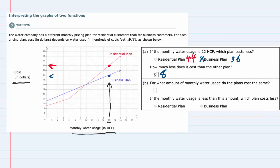Moving to the second question, part B: for what amount of monthly water usage do the plans cost the same? If we're looking for where the plans cost the same, we're going to look for where these two lines intersect. Right here, the two plans cross, and that is where they cost the same.